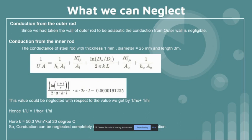Next, we are considering the conduction from the inner rod. For that, we are calculating the conductance of the steel rod with thickness one millimeter and diameter 25 millimeters with length three meters. In the overall heat transfer coefficient, the contribution of the conductance part came out to be negligible in comparison to the convection mode of heat transfer. So we are neglecting this.